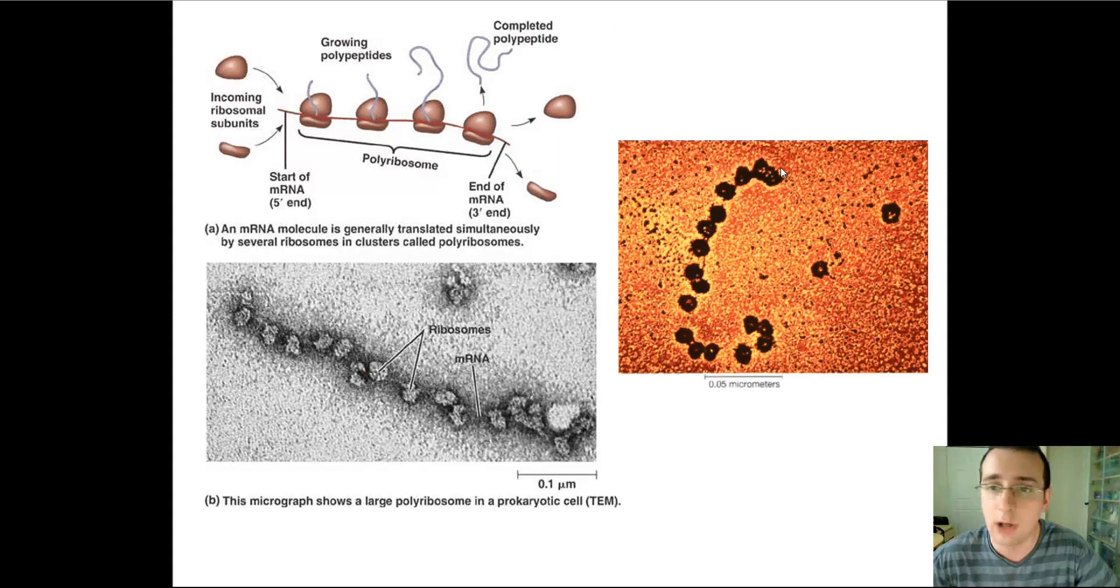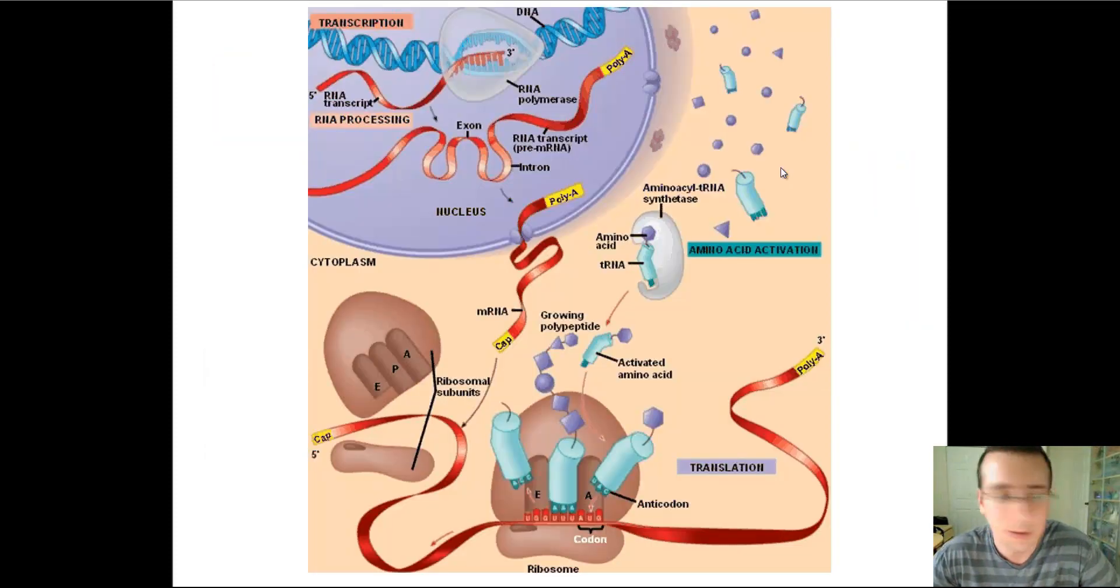Sometimes this process will happen in an assembly line, with multiple ribosomes reading the messenger RNA all at once, each reading a subsequent piece of it, and that will make several proteins all at once. Once this process is finally completed, you have protein synthesis.